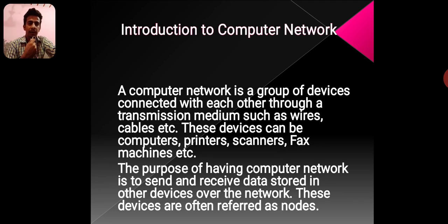Introduction to Computer Networks. A computer network is a group of devices connected with each other through a transmission medium such as wires, cables, etc. These devices can be computers, printers, scanners, fax machines, etc. The purpose of having a computer network is to send and receive data stored in other devices over the network. These devices are often referred to as nodes.